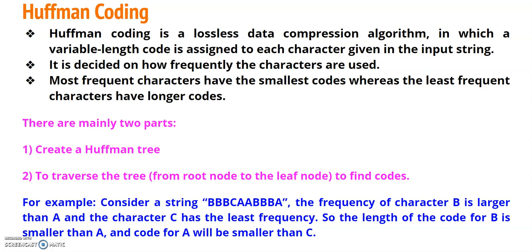For example, consider the string BBBCAABBBA. The frequency of character B is larger than A, and character C has the least frequency. So the length of the code for B is always smaller than A, whereas the code for A will be smaller than C.